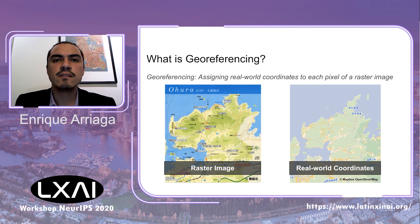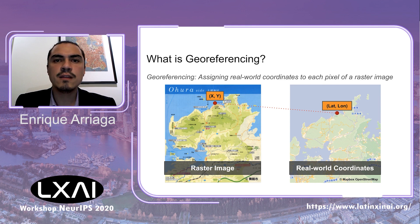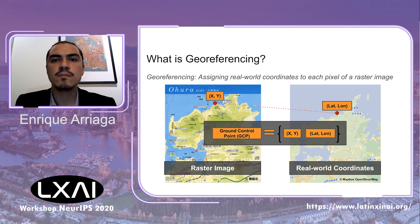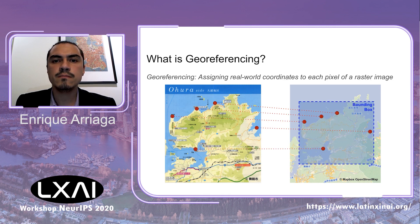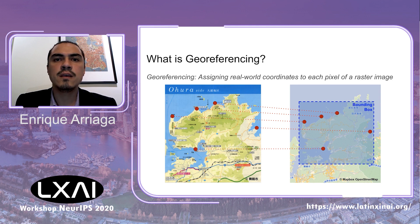Geo-referencing means assigning real-world coordinates to each pixel of a raster image. This is usually done by creating matches of x and y in the raster image to the latitude and longitude of the location it is depicting. Each one of these matches is called a ground control point, or GCP. With a series of GCPs, a transformation can be calculated to obtain the bounding box depicted by the map.